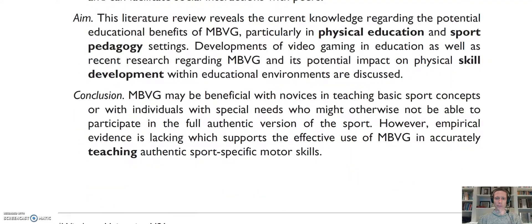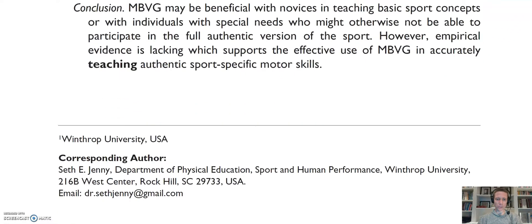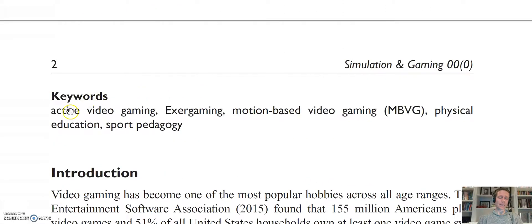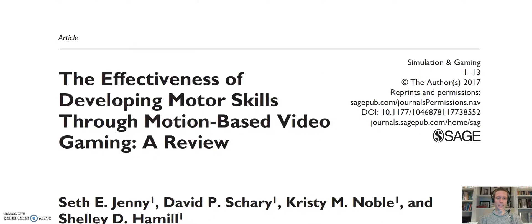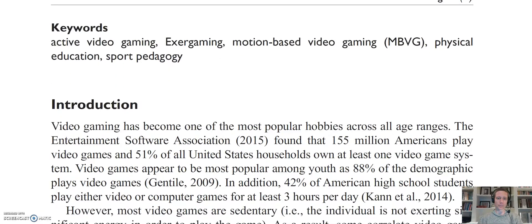That's almost a bit of the significance of this paper, this review. And then the conclusions — motion-based video gaming, which we did not write until the end after the review was completed — may be beneficial with novices in teaching basic sports concepts, or with individuals with special needs who might otherwise not be able to participate in the full authentic version of the sport. However, empirical evidence is lacking, which supports the effective use of motion-based video gaming in accurately teaching authentic sport-specific motor skills. Here are the keywords. Notice that per APA, we try not to use any of the same keywords that are in the title, because when somebody is doing a search for your paper they'll already find it through the title — so keywords should be related words not exactly in your title.